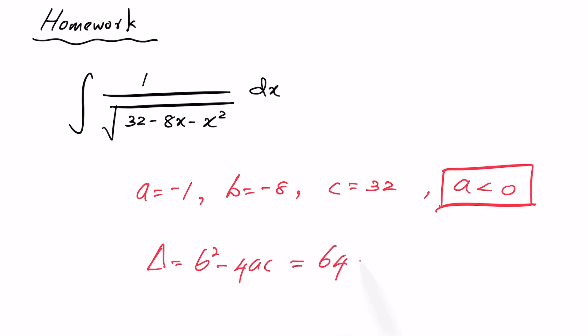Since the second term is also positive, delta simplifies to a positive value. Therefore, for this example you will again need a sine theta substitution. However, you must correctly determine the coefficient associated with sin θ after completing the square for this problem. Carefully complete the square and follow the exact same steps discussed in this video to obtain the answer.